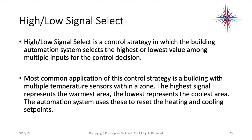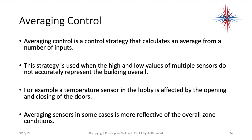High and low signal select is a control strategy in which the building automation system selects the highest or lowest value among multiple inputs for a control decision. The most common application is a building with multiple temperature sensors in a zone — the highest signal represents the warmest area, the lowest the coolest. Averaging control collects an average from a number of inputs, used when high and low values of multiple sensors don't accurately represent the building overall — for example, a lobby sensor affected by door openings.